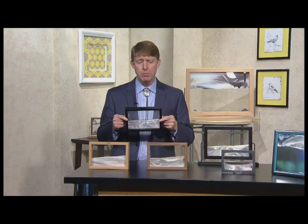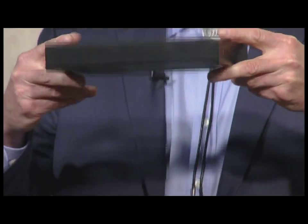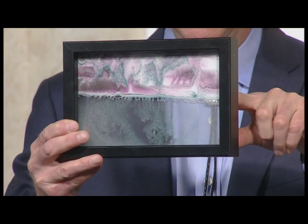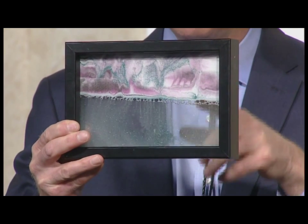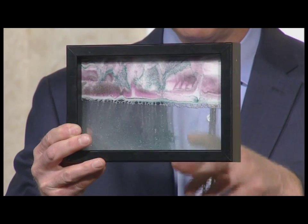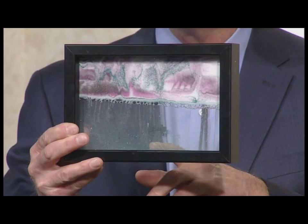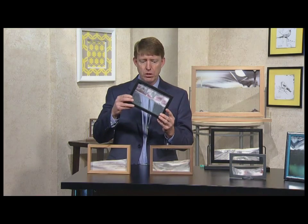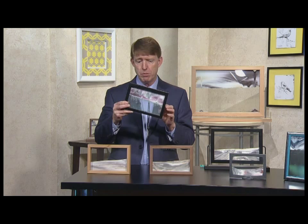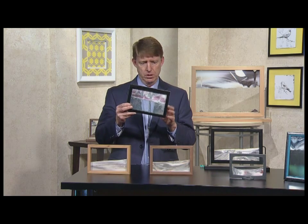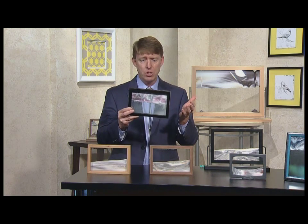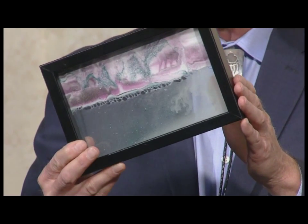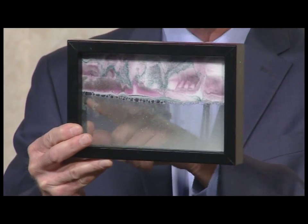With the sand picture you have two jobs. You have to turn it over, and you have to get those bubbles to go all the way across. When you do that, the sand will fall between the bubbles to create the mountains, valleys, and dunes. If you turn these over and you don't get the bubbles to go all the way across, there's nothing to hold up the sand. So make a conscious effort to get the bubbles to go all the way across.